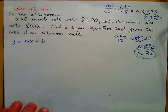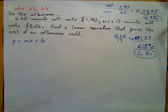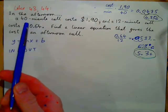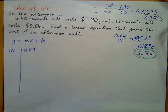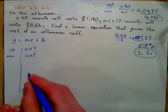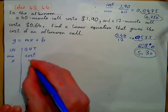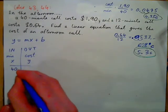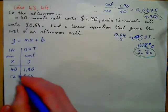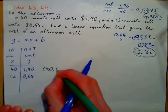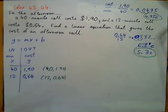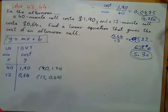What's the input and what's the output? Minutes would be the input and cost would be the output — because you need to know the minutes before you can calculate the cost. So x is minutes and y is cost. We have x equals 40, y equals $1.90, and x equals 12, y equals $0.64. Basically, we have two ordered pairs: (40, 1.90) and (12, 0.64), and we need to find the equation of a line through these two points.